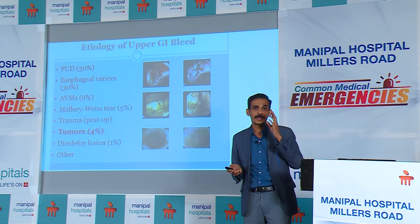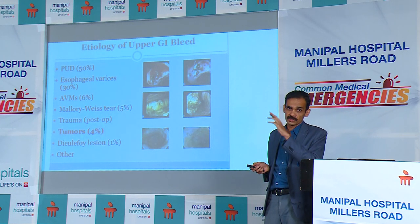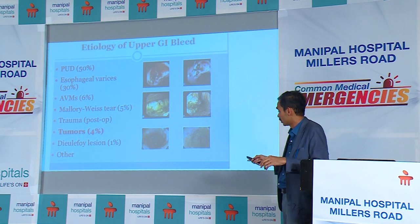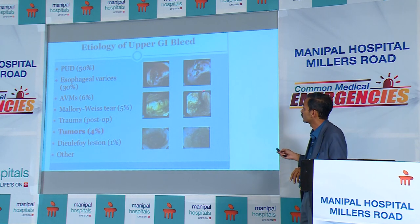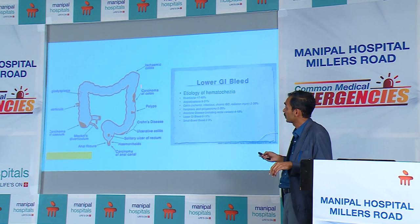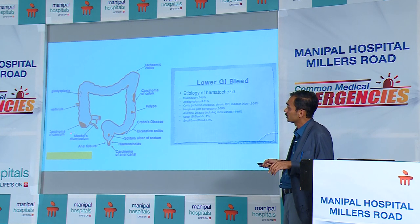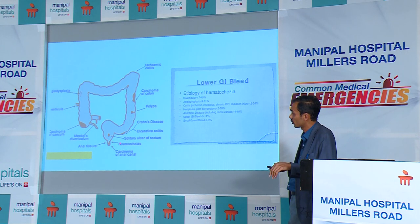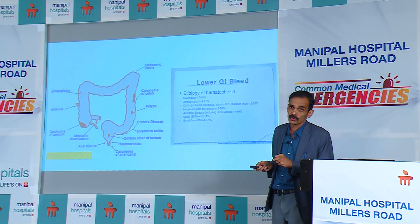Knowing whether the bleed is variceal or non-variceal is the most important differentiation a gastroenterologist has to make. For lower GI bleed, the common causes are angiodysplasia, ischemia, carcinoma colon, polyps, inflammatory bowel disease, Meckel's diverticulum within 2 feet of the ileocecal junction, carcinoma, solitary rectal ulcers, and hemorrhoids.